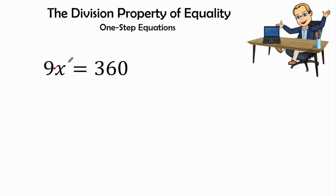Because we want to eliminate that 9, we are going to use the division property of equality.